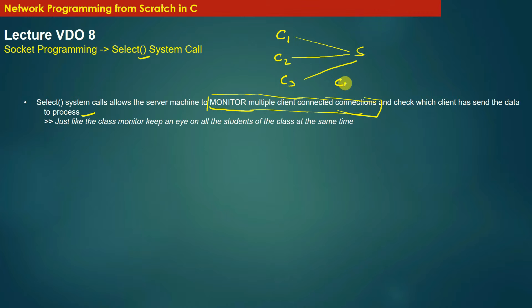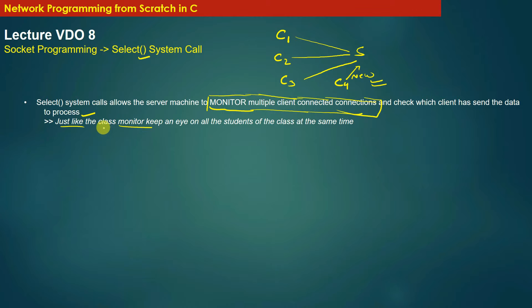In addition, suppose client C4 is not yet connected but sends a new connection initiation request to server S. Using select, the server can monitor not only existing connected clients but also new connection initiation requests from new clients. This is similar to a class monitor who keeps an eye on all students at the same time — the server keeps an eye on all file descriptors of connected clients and also monitors the arrival of new connection requests, allowing it to take appropriate action.